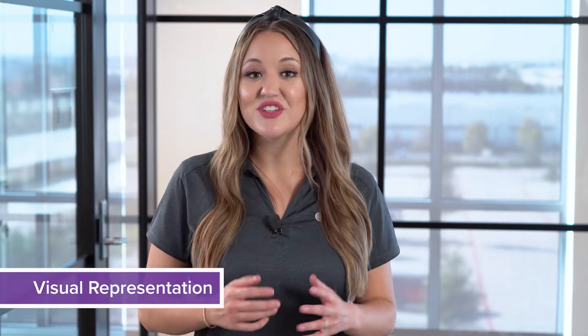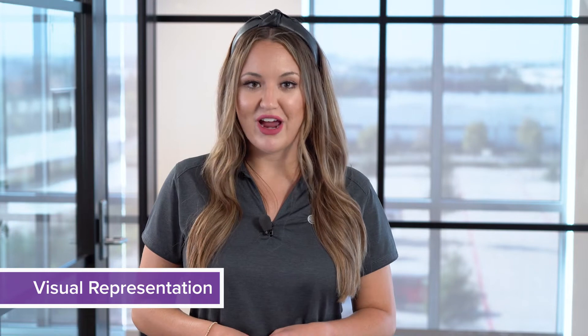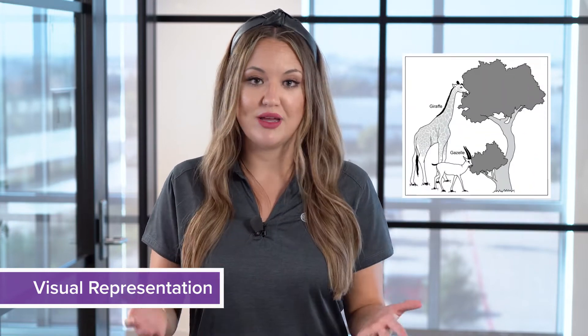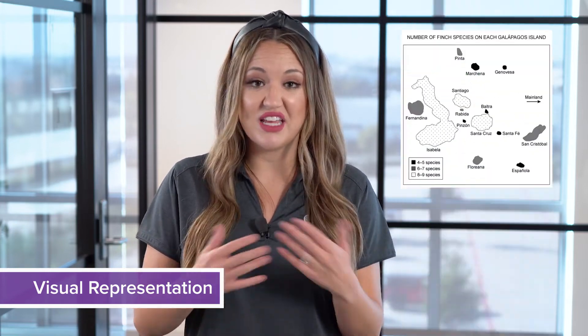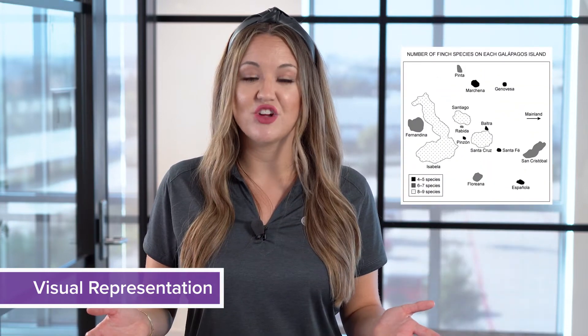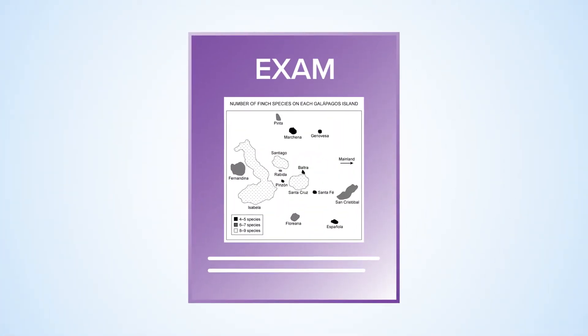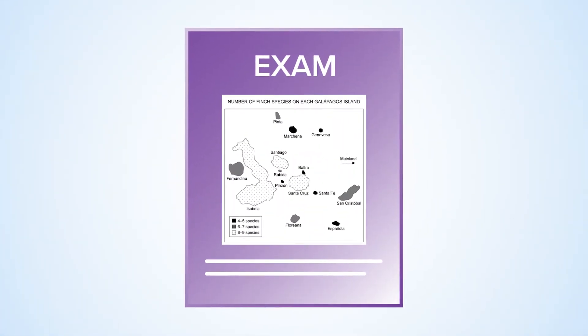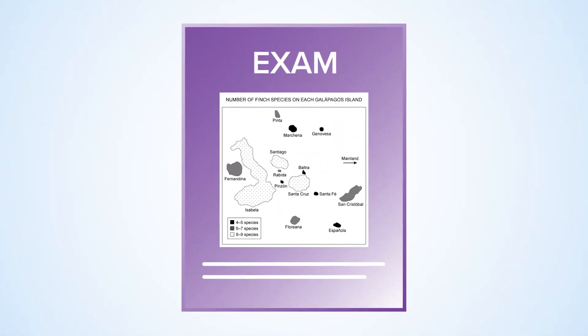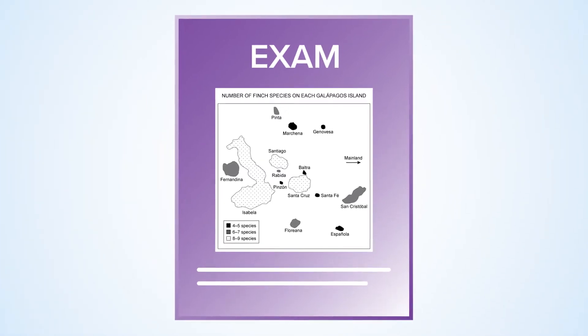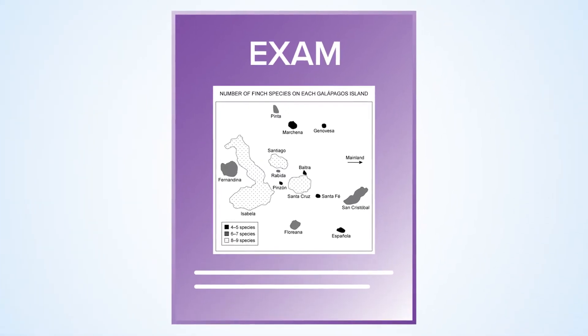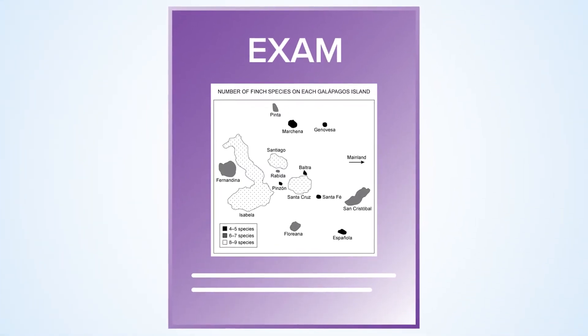The second practice is visual representations, where you'll learn to apply environmental knowledge to diagrams or images from things that you might see in your everyday life. On the exam, these questions will have a diagram or a map where you'll be asked to analyze information or draw conclusions from that visual representation.